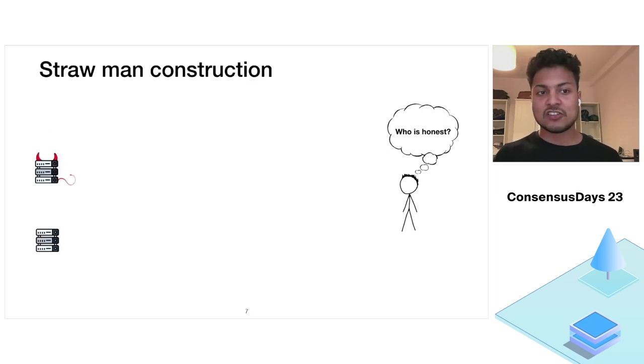Now let's look at a straw man construction. So Bob now connects to two full nodes. We will also call these full nodes as provers and Bob as the verifier. Now we assume that at least one of them is honest. So if both of them are honest, Bob can simply ask the latest committee to both the provers and they will say the same thing and he can trust either of them. But let's say they disagree, in which case one of them must be malicious.